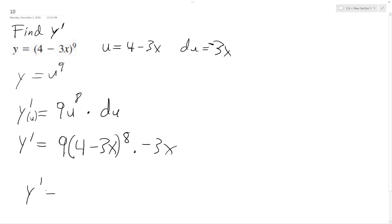And ultimately what we get is y prime is equal to negative 27x, quantity 4 minus 3x raised to the eighth. And that's it.